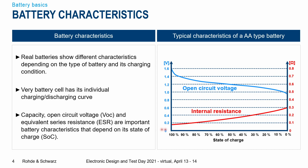This is the other way around with the internal resistance — the internal resistance gets higher as the battery is discharged. So capacity, open circuit voltage, and internal resistance are very important battery characteristics that depend on the state of charge. This means you cannot just use a normal power supply; you need one that can really simulate these real behaviors.